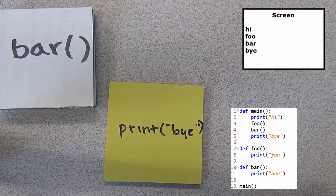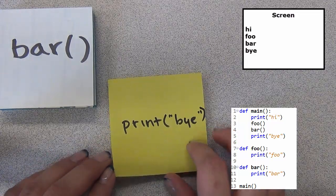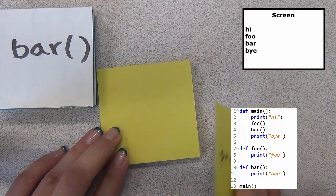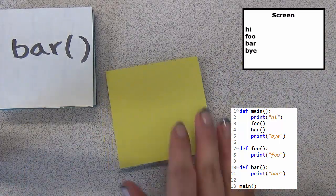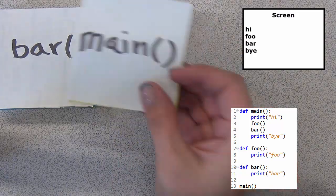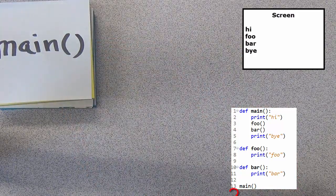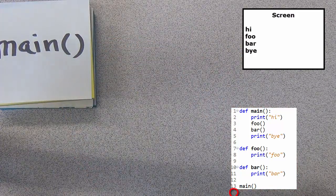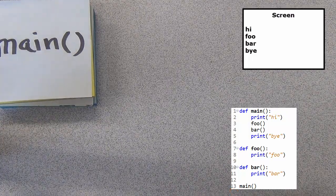After printing bye, I move on, only to find that there are no more lines left in the function. Execution of main is completed, and as there are no lines past line 14, execution overall is done.